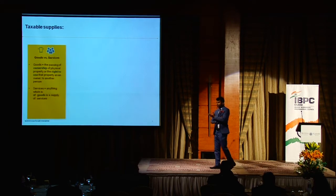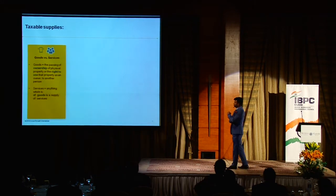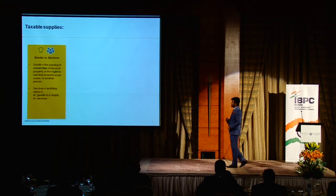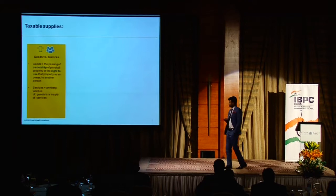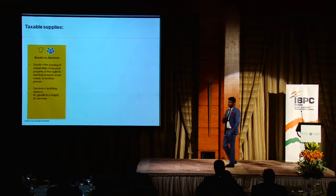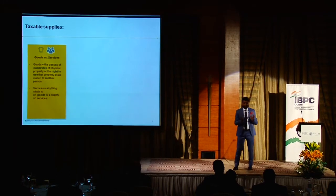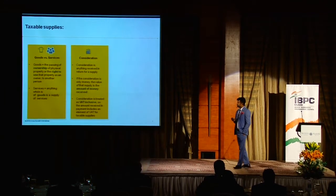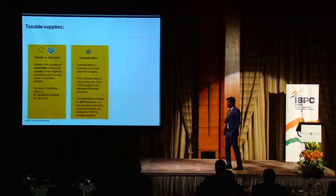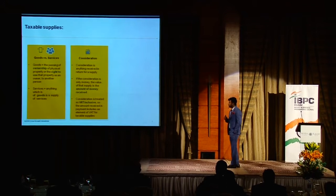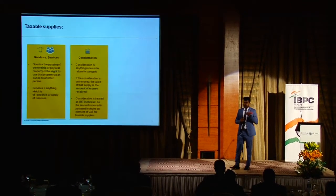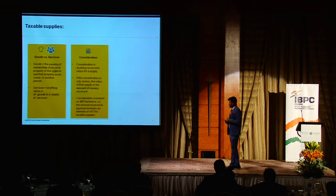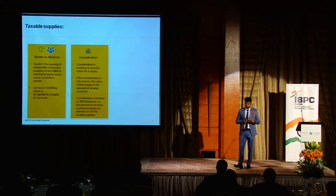The definition is clear: tax is due on goods, which means the passing of ownership of physical property rights to the transferee, or passing on the right to use that property to another person. Anything which is not goods is a service, so they try to cover every single aspect. Consideration is anything received in return for the supply; if it is only money, the value is the amount of money received.